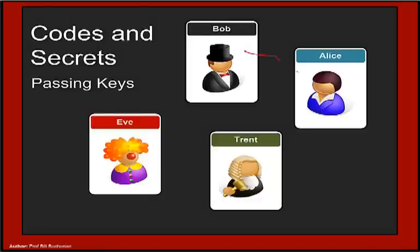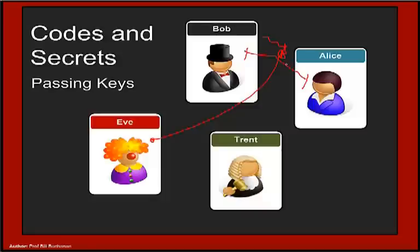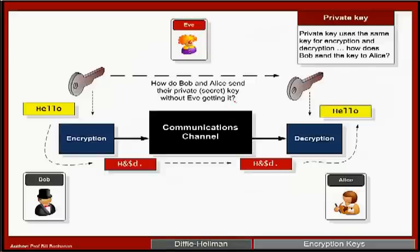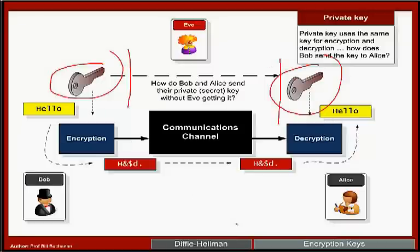Now Bob and Alice can communicate using private key encryption, but the problem is: how does Bob send Alice the key without Eve intercepting it? Once Eve has the key, Bob and Alice can't tell she's decrypting messages. What is needed is a method for Bob and Alice to communicate openly — with Eve listening — yet both end up with the same shared key that Eve cannot determine.